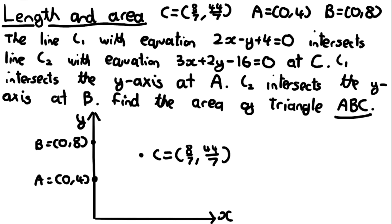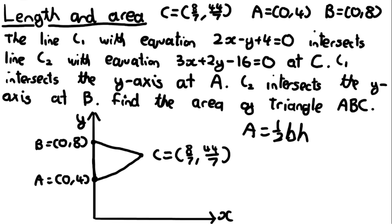We need to find the area of triangle ABC by connecting points A, B, and C. Using the formula A equals half BH, the base is the line segment from A to B along the y-axis. We know B has y-coordinate 8 and A has y-coordinate 4, so a quick subtraction gives B equals 8 minus 4, meaning the base equals 4.